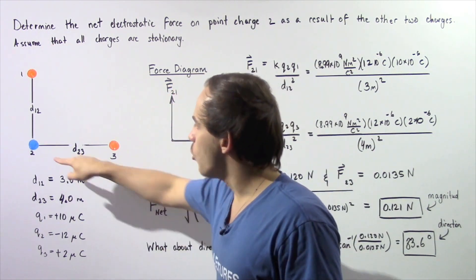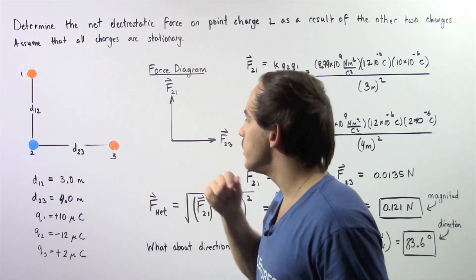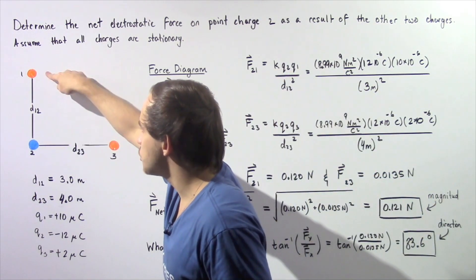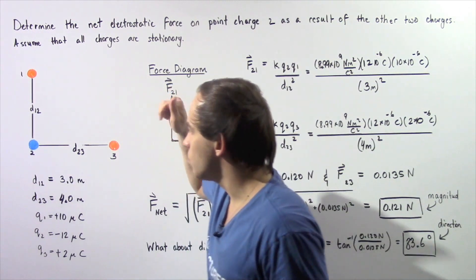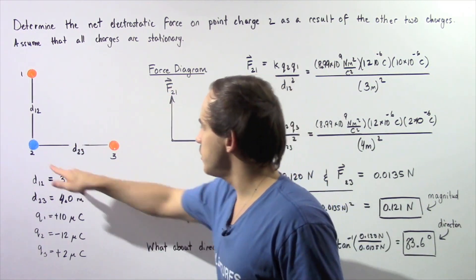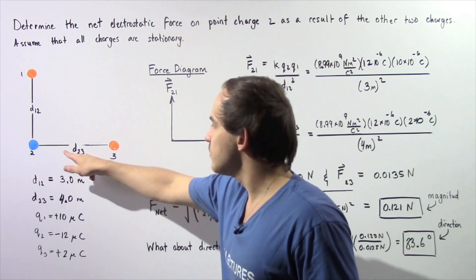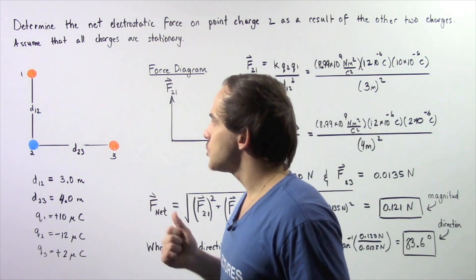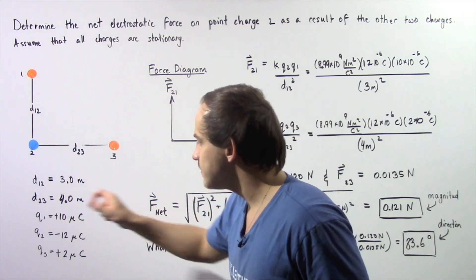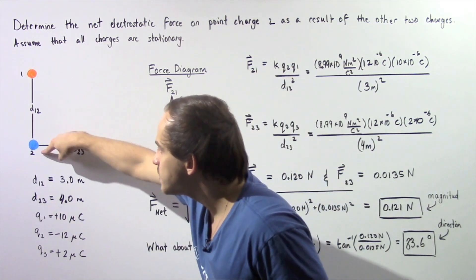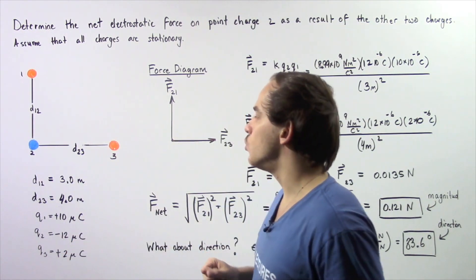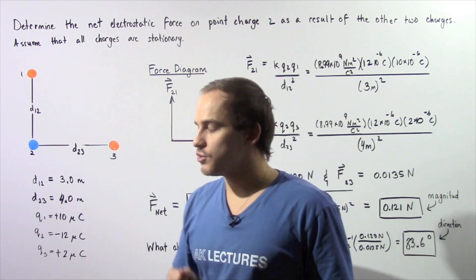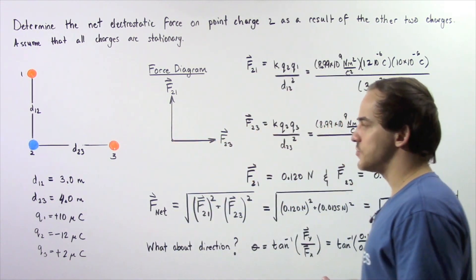We have point charge number one, point charge number two, and point charge number three. The distance between charge one and charge two is three meters, and the distance between charge two and charge three is four meters. The charge of point charge one is positive 10 micro coulombs, point charge two has negative 12 micro coulombs, and point charge three has positive two micro coulombs.